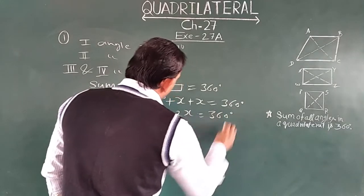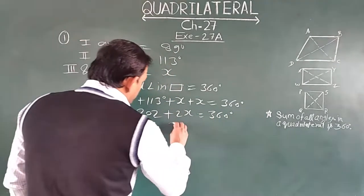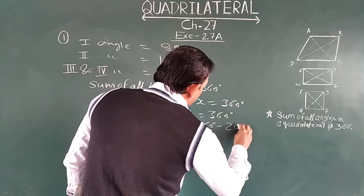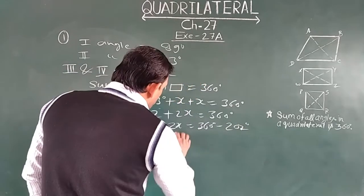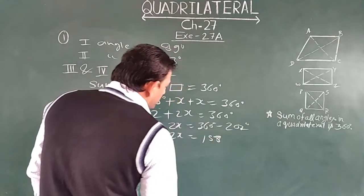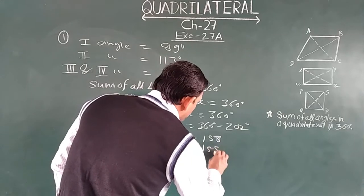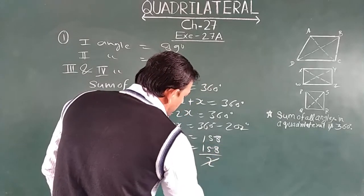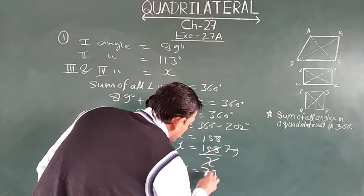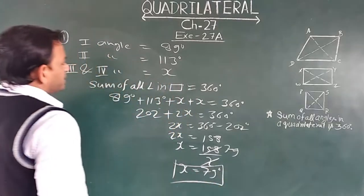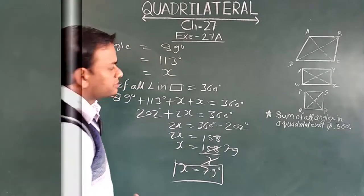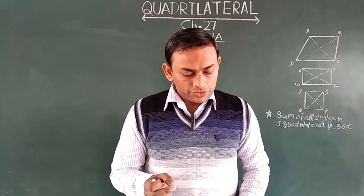When you add it, you get 202 plus 2x equals 360 degrees. Now 202 goes to the right side: 2x equals 360 minus 202, so 2x equals 158. Therefore x equals 158 divided by 2, which gives x equals 79 degrees. So the equal angles — the third and fourth angles — are each 79 degrees.